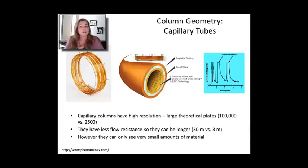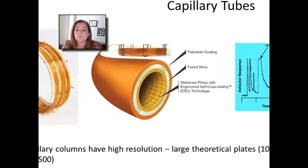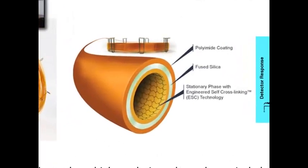So capillary columns can be extremely long, up to 30 meters, and that's going to give you really good resolution. If you remember, the number of plates actually goes proportionally with the length of the column. And they're going to be very thin. They're actually thin capillaries of glass, and the sizes are often well under a millimeter. And you put the stationary phase on the inner surface of the capillaries.